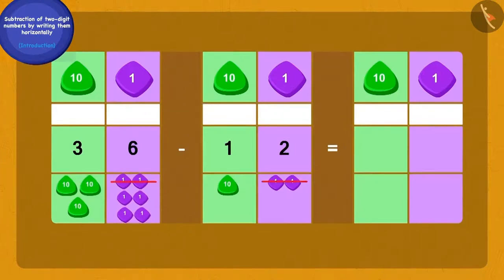How many ones are we left with now? Yes, we have 4 ones left with us. Now finally, if we remove 1 tenth of 12 from 3 tenths of 36, then we will have 2 tenths left.